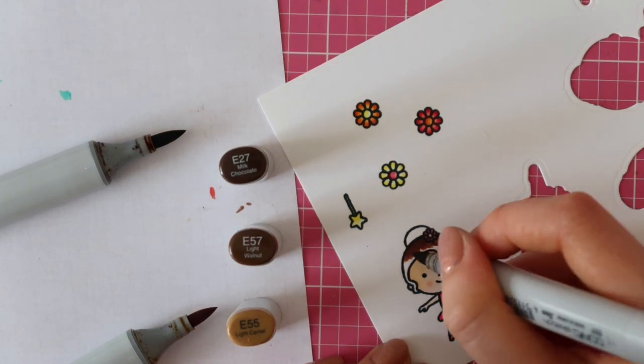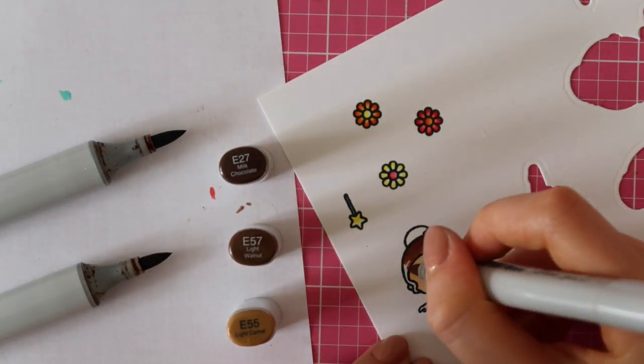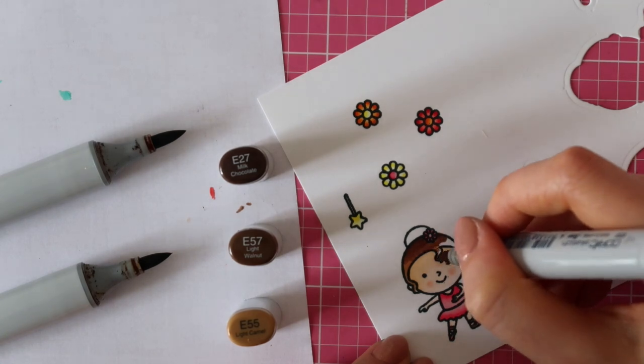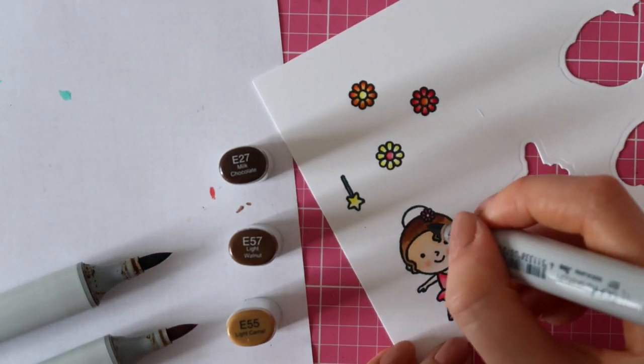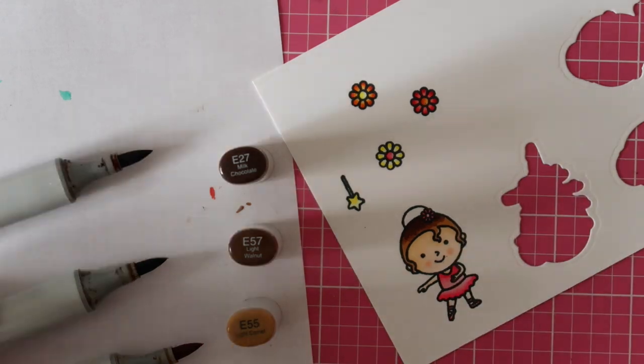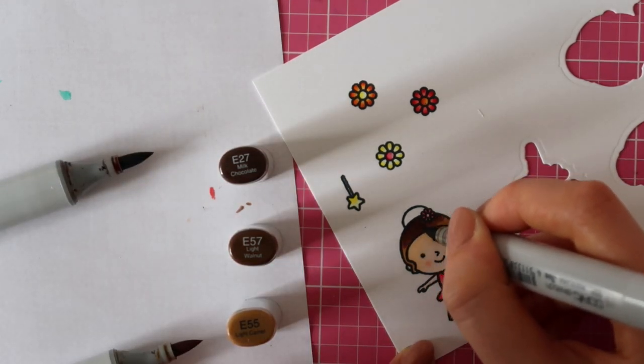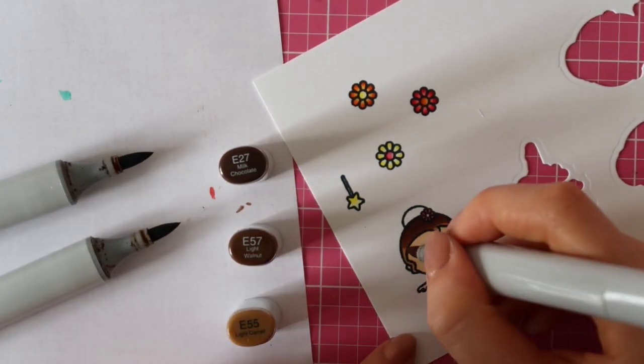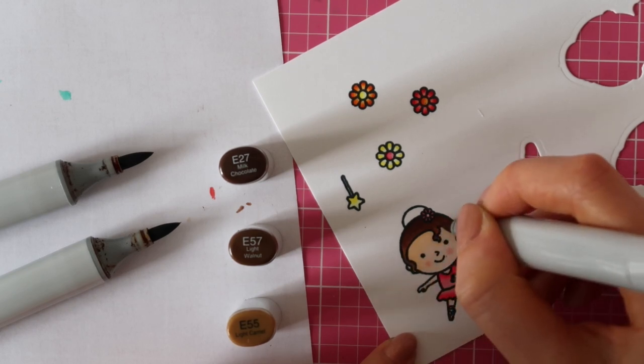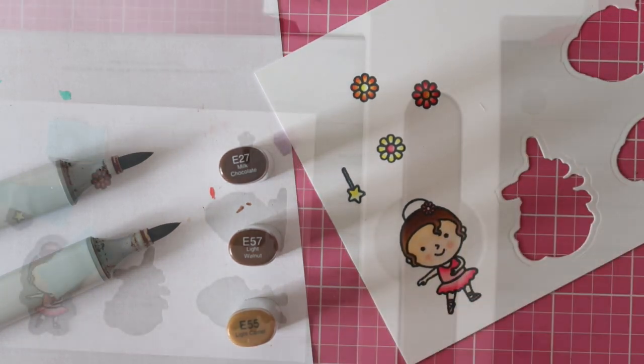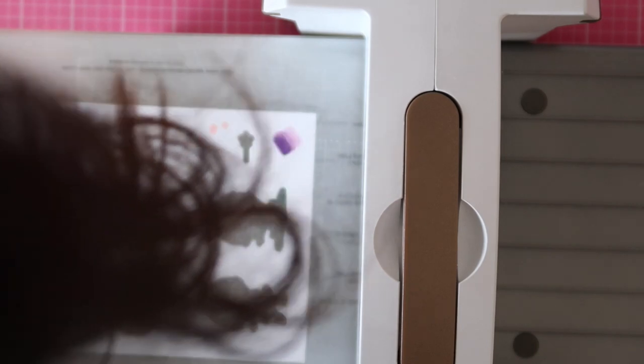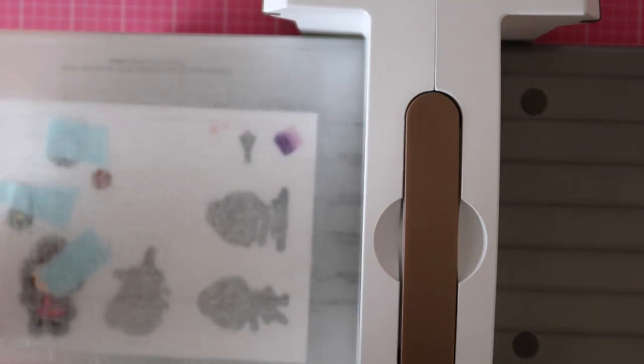For her hair, I'm using three shades of brown. I'm using E27, E57 and E55 and I repeated these steps twice and as you can see, it really makes a difference. The second time, or after the second time I added those colors, the hair looked more of a darker brown than it did before.